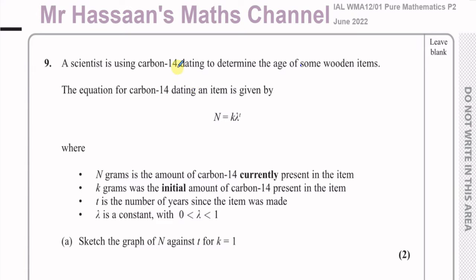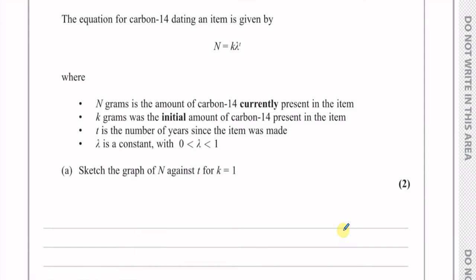A scientist is using carbon-14 dating to determine the age of some wooden items. The equation for carbon-14 dating an item is given by n equals k times lambda to the power of t, where n grams is the amount of carbon-14 currently present, k was the initial amount, t is the number of years since the item was made, and lambda is a constant between 0 and 1. We need to sketch the graph of n against t for k equals 1.